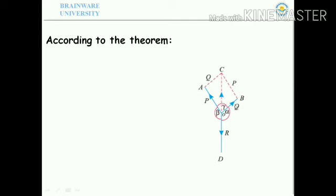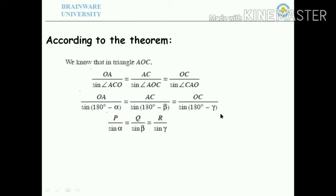And sine CAO = sine(180 minus gamma) = sine gamma. Substituting OA = P, AC = Q, and OC = R into the sine rule equations: P/sin α = Q/sin β = R/sin γ. This proves Lami's theorem.